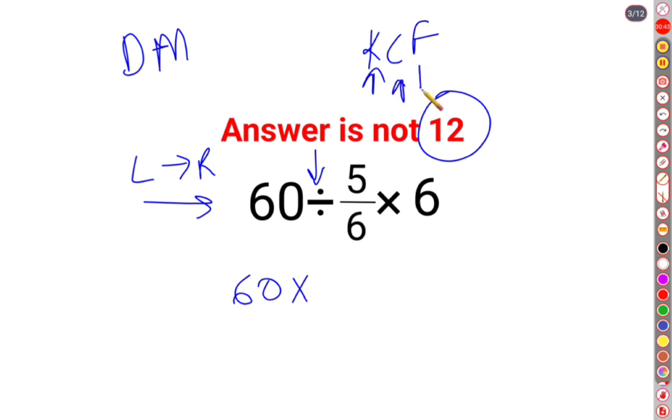And F stands for flipping or taking reciprocal of 5/6 which is 6/5 multiplied by 6. So here, this is cancelling and this is what the 12s are.